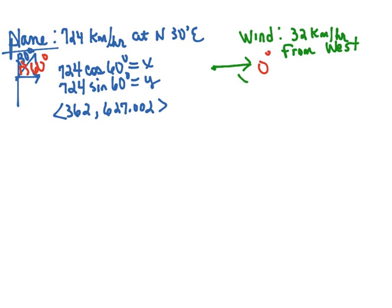So our x component would be 32 times the cosine of 0 degrees, and our y component would be 32 times the sine of 0 degrees. So our wind vector in component form would be 32, 0.